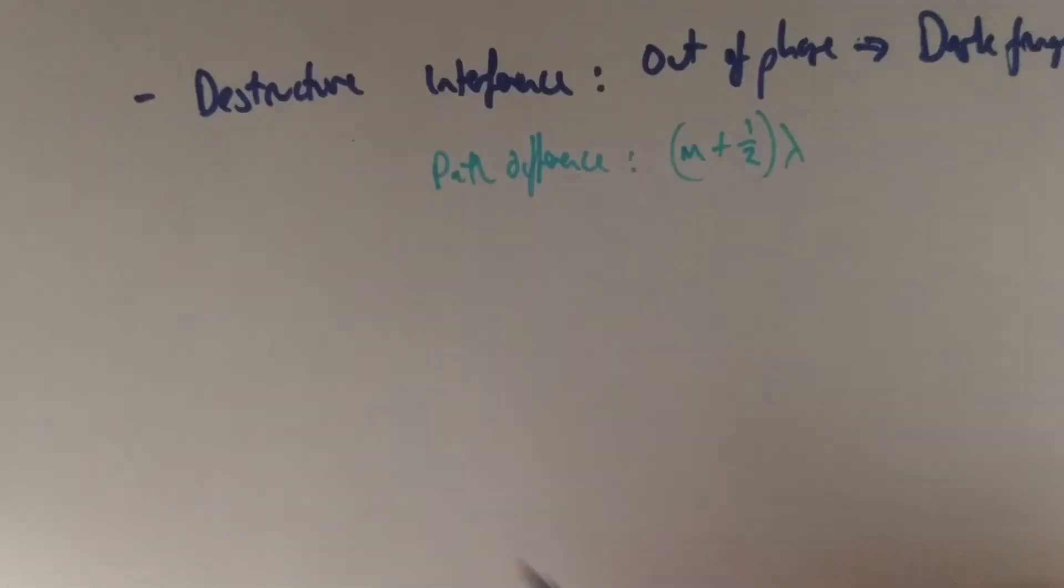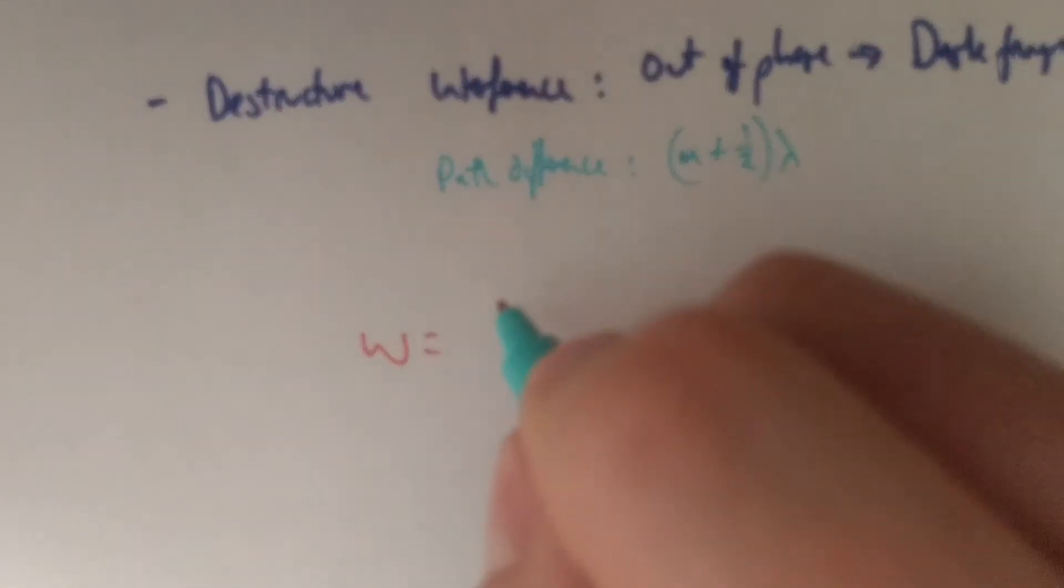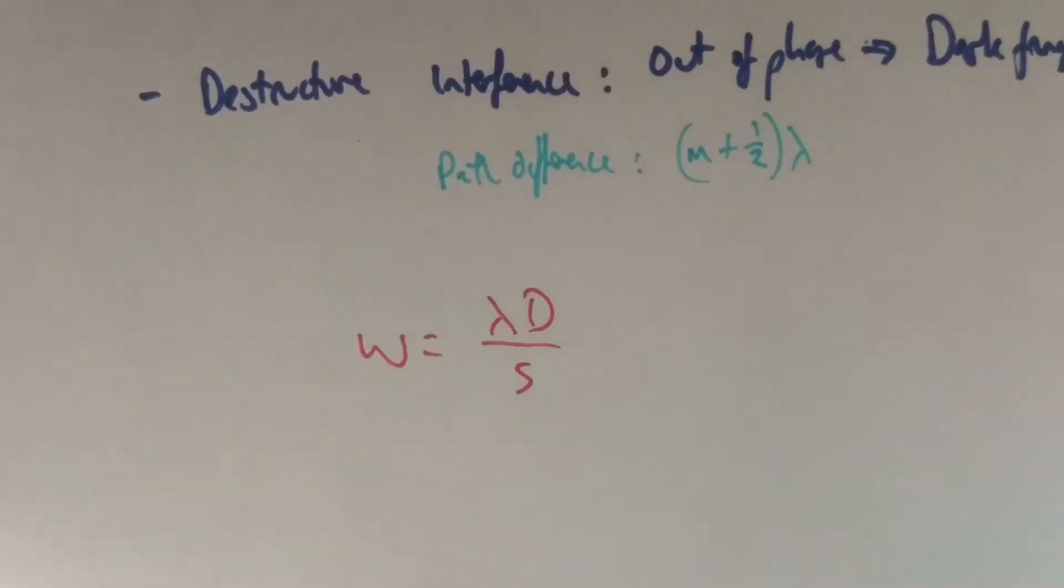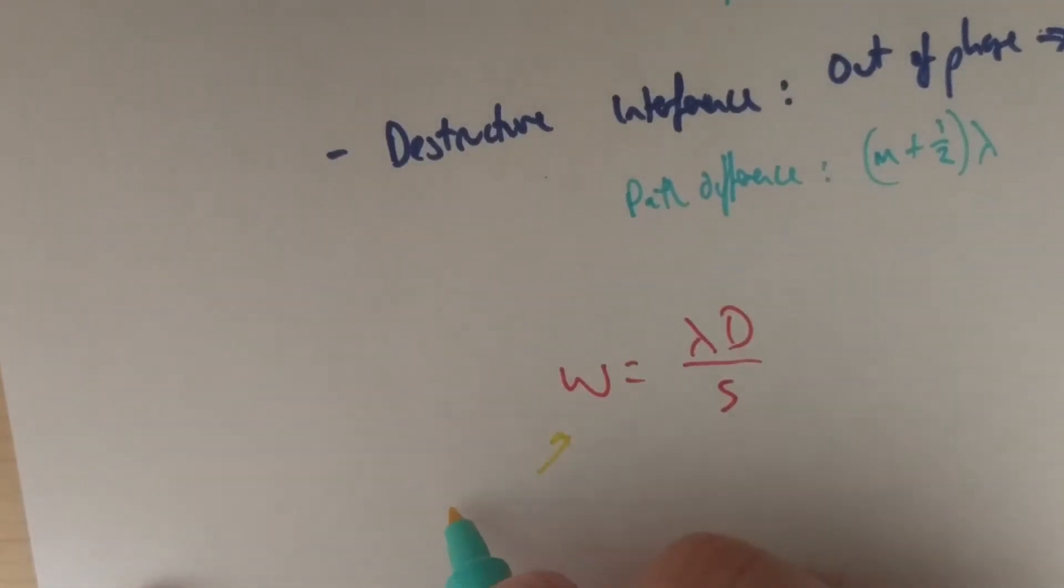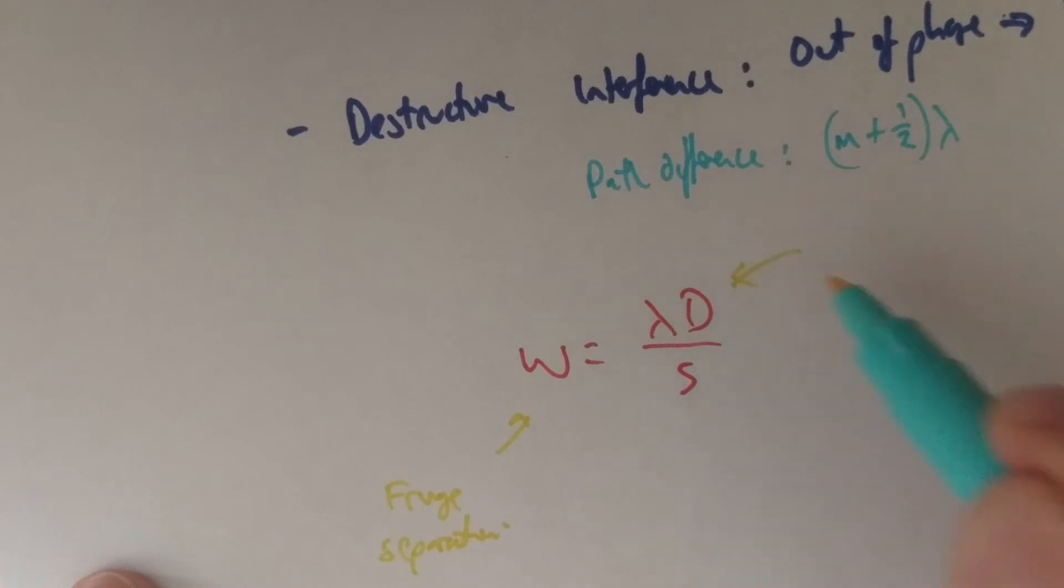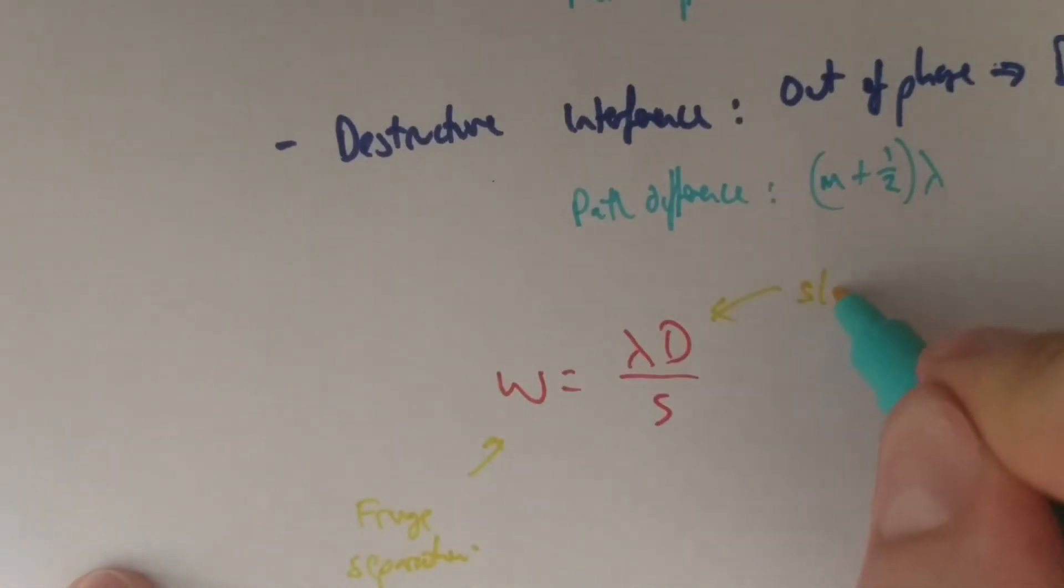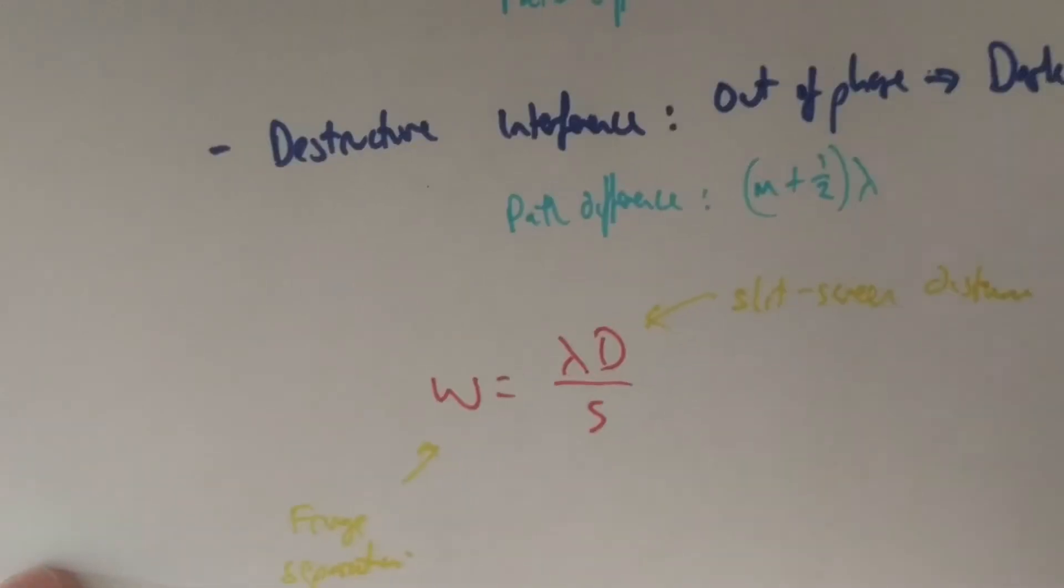Our equation for Young's double slit: W equals lambda D over S. W is the fringe separation. Lambda, as always, is our wavelength. D is our slit-to-screen distance. And S is our slit separation.